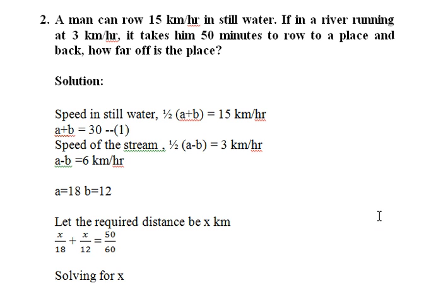The formula for speed in still water is 1/2 × (a + b) = 15 km/h, so a + b = 30. The formula for speed of stream is 1/2 × (a − b) = 3 km/h, so a − b = 6. We now have two equations which we solve to get the values of a and b.